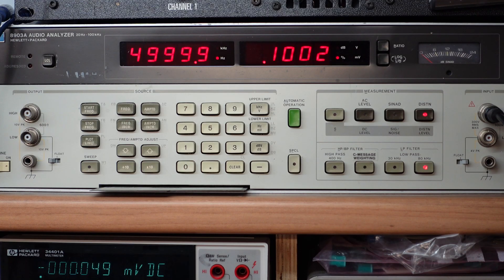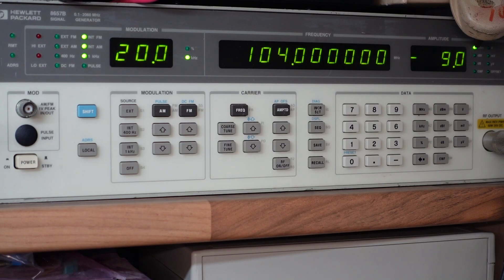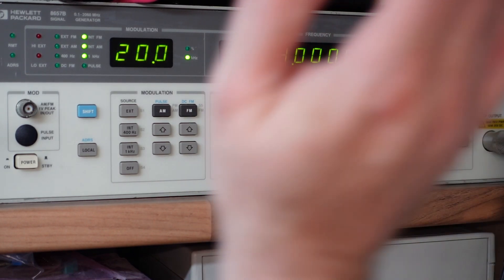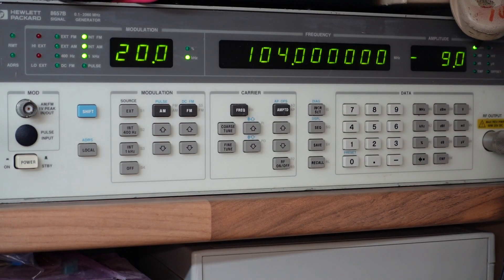And now we're moving on to the RF equipment. This is a signal generator—this is an HP 8657B. This will do about 2 gigahertz. I may use this for testing and calibrating radio receivers.